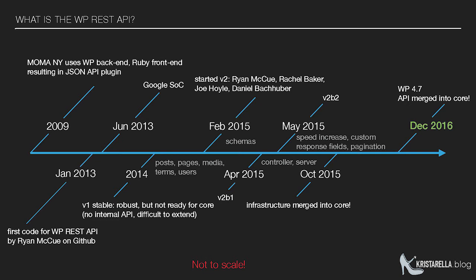In 2015, version 2 was started. The main people working on that were Ryan, Rachel, Joe, and Daniel — the main contributors to the WordPress REST API. They added schemas, which are essentially like documentation within the API but can also be used for validating information you're trying to post to your site. Later in beta 1, a controller class was added which can be extended — that's how you add custom information to the REST API. For example, WooCommerce would extend the controller to add products, so you can get not only posts and pages but products too.